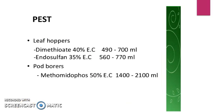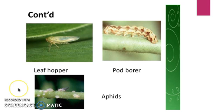We now move on to the pests of cowpea. The first pest we will look at is the leaf hopper, which feeds by puncturing the underside of leaves and sucking out plant juices. Its toxic saliva causes spotting, yellowing, leaf curling, stunting, and discoloration of plants.